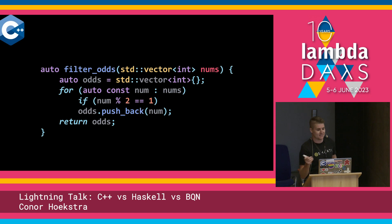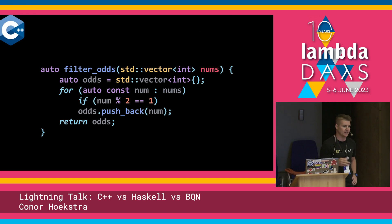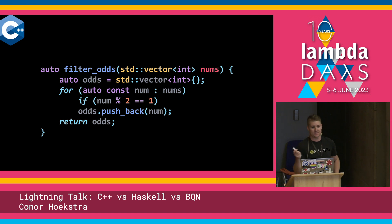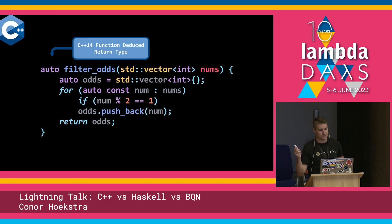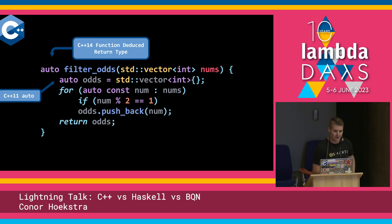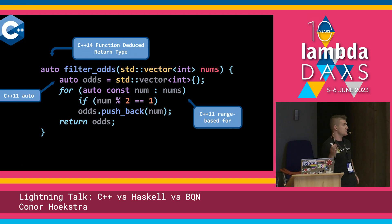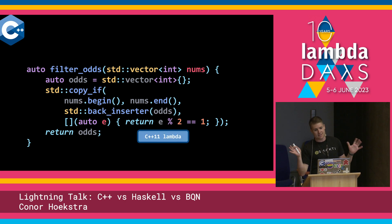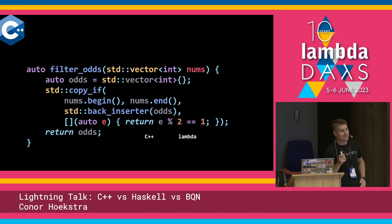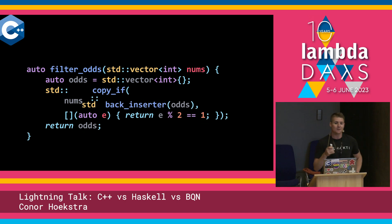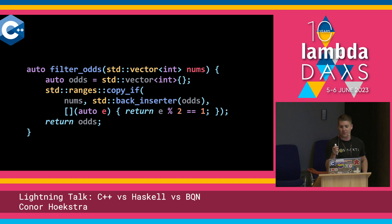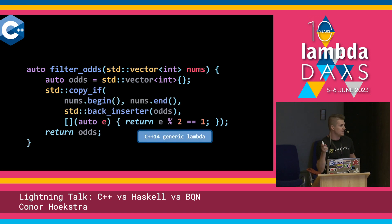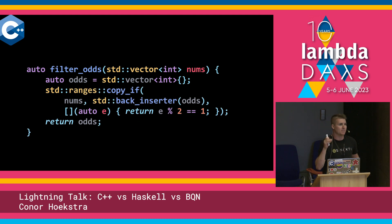First we're going to start with C++. This is a C++14 solution — we're just declaring an empty vector and then push-backing our odd elements. This is C++14 because we're using a deduced return type feature, and also C++11 features like auto and range-based for. My preferred solution is using a C++98 copy_if with a C++11 lambda — actually a C++14 lambda because we're using the auto keyword in the parameter list. Moving to C++20, we got the range overload of copy_if, so instead of passing two iterators — numbs.begin() and numbs.end() — you can pass the vector directly.